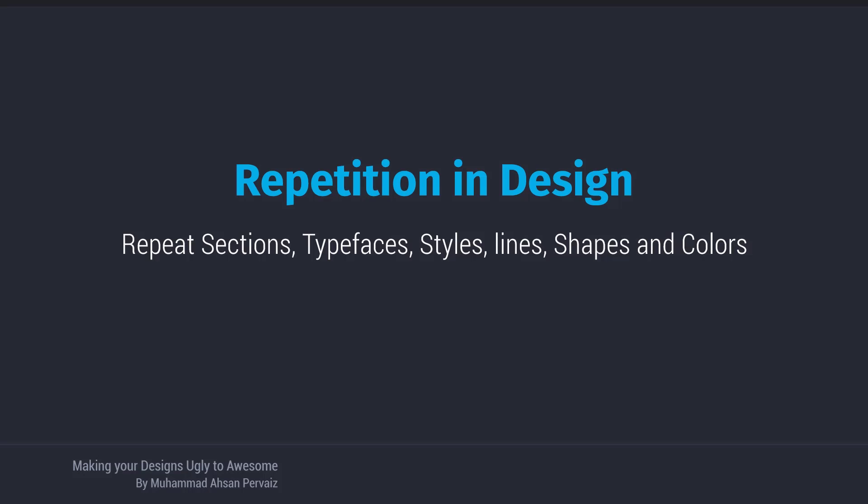Let's talk about repetition in design. Repetition means repeating the same styles, similar shapes, colors, widths, and heights in your design again and again. This gets you closer to a symmetrical and balanced design. For example, if you have a green sign-up button on a landing page, whenever a user sees that same green button they'll recognize it as an interactive element. So repetition communicates consistency to the user.